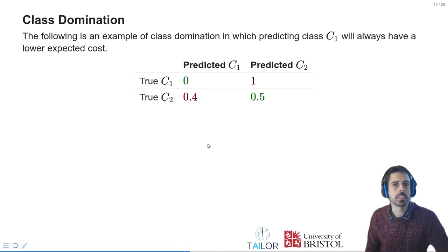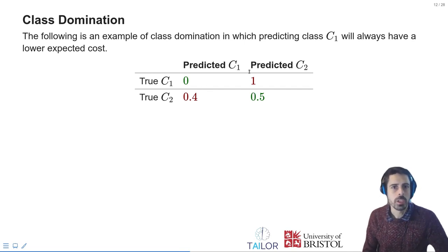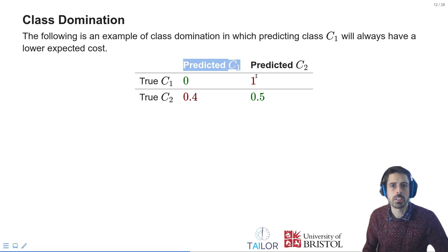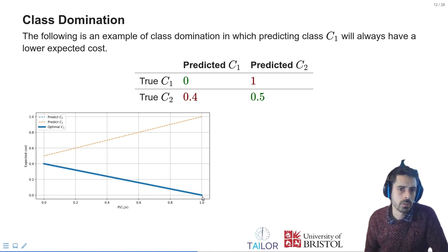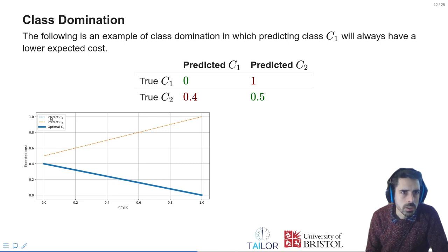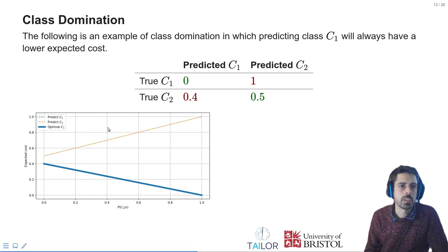This is an example of class domination, in which predicting class 1 always has a lower cost than predicting class 2, independently of the true class. This is reflected in the cost line figure in which predicting class 1, the blue line, is always below the cost of predicting class 2.